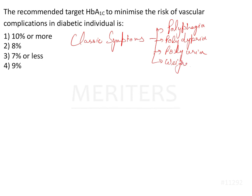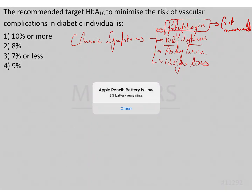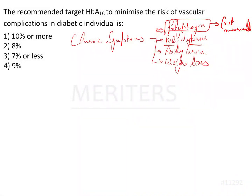These are the classic symptoms. Sometimes polyphagia is not considered a classic symptom because it is not measurable. All other entities are measurable — for example, polydipsia: you can measure how many liters of water you are drinking in a day. Polyuria: urine can be measured, and weight loss can also be measured. So polyphagia is sometimes excluded from the classic symptoms.